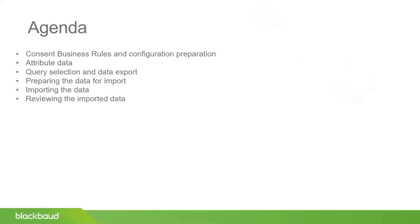First, the setup in the system — your consent business rules and other configuration preparation options you would need to do before undertaking this process to import from stored attribute data. Then a quick review of our previous recommendations for storing consent in the attribute area. Then the query to pull out that attribute consent data and export it. Then preparation of that data in Excel prior to the import process itself, and finally a review of what the data looks like in the database and in the WebView NXT.